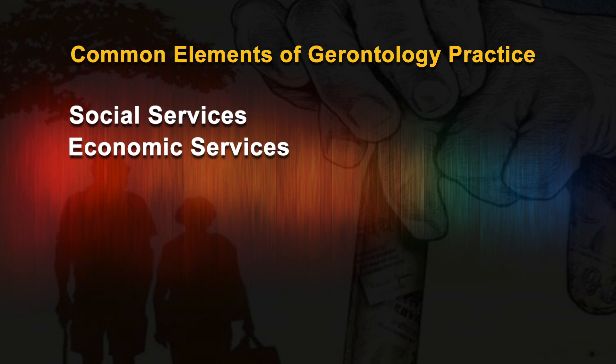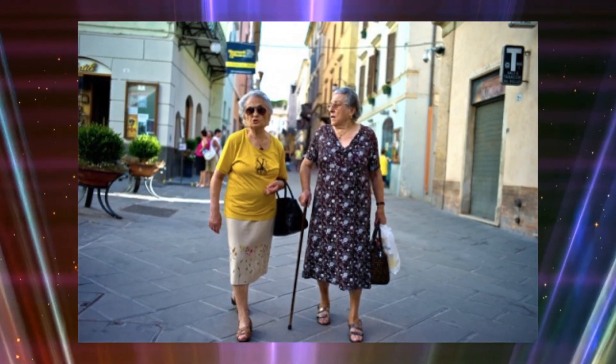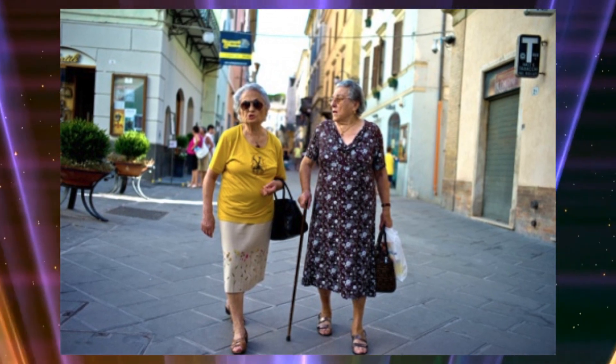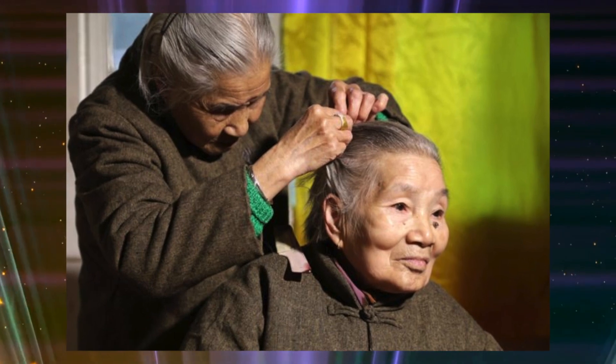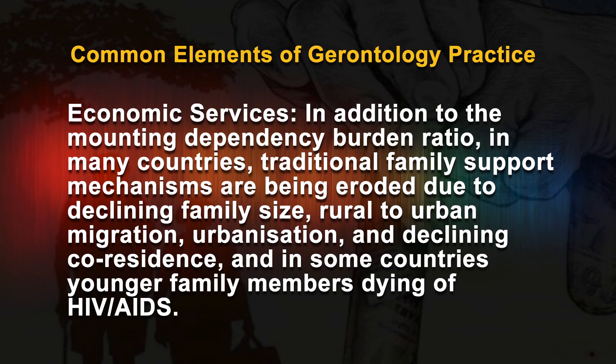Economic services: across the globe, the impact of population aging is increasingly evident in old-age dependency — a burden on potential workers. The rising dependency burden is most noticeable in Europe and Japan. Traditional family support mechanisms are being eroded due to declining family size, rural-to-urban migration, urbanization, declining co-residence, and in some countries, younger family members dying of HIV/AIDS. As a result, many older people — particularly older women — are facing isolation, abandonment, loneliness, and lack of financial support. The potential socio-economic impact of an increasing old-age dependency ratio is an area of growing concern.